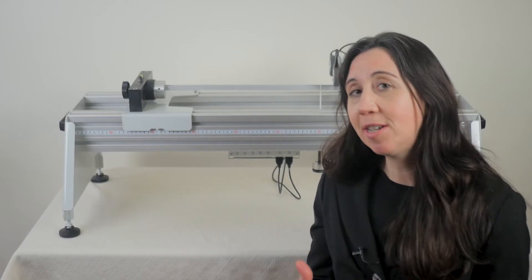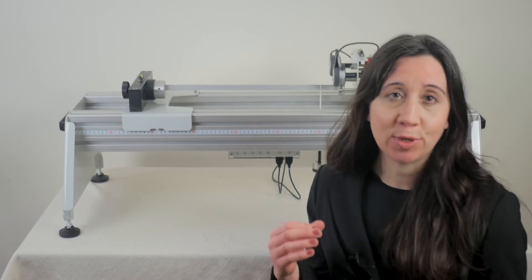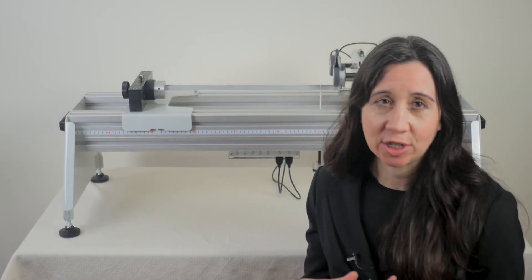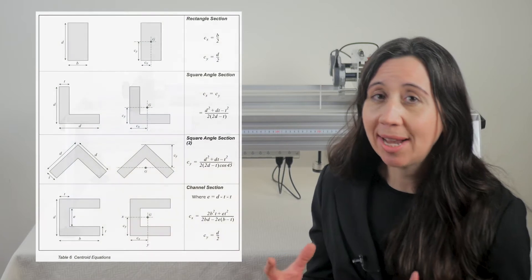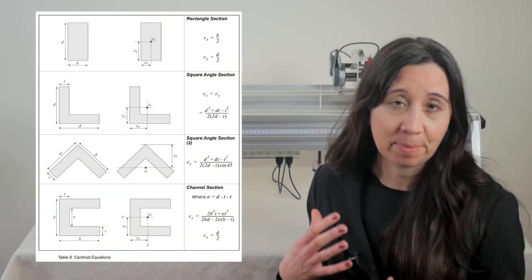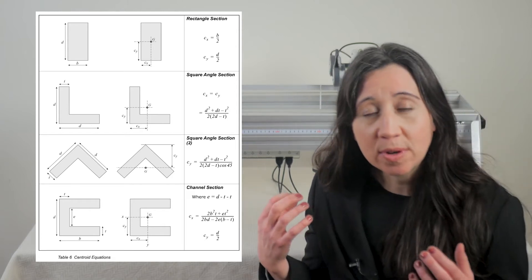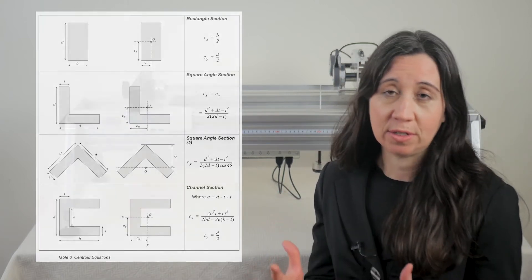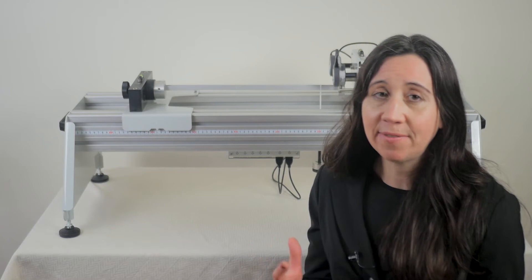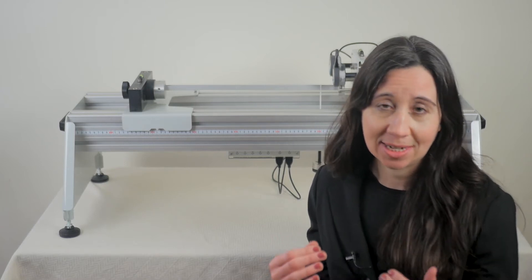When choosing a beam for a structure, engineers would usually choose one with a symmetrical cross-section, but in some situations you cannot load the beam in the direction of the principal axis. In certain situations it is also more convenient or structurally efficient. As a result, bending can occur in both directions of the beam.